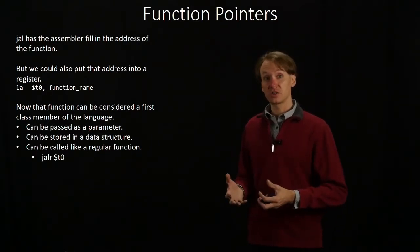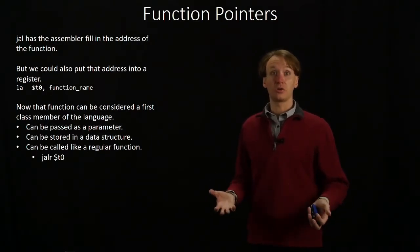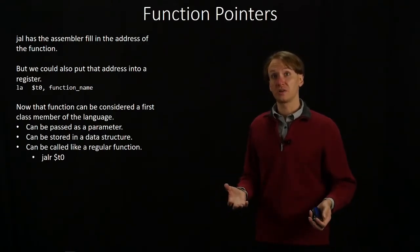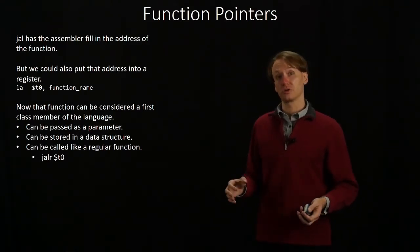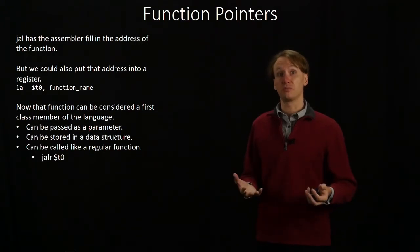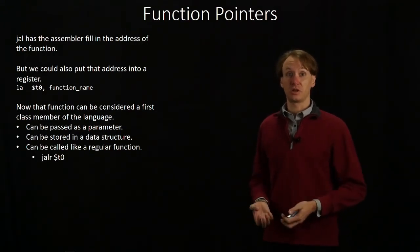If we apply some abstraction on top of that, we can actually get polymorphism out. That's what we're going to look at next time is how we can use function pointers to allow us to implement polymorphism even at the assembly language level.